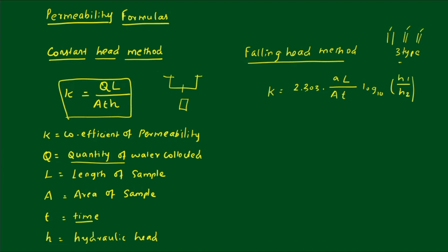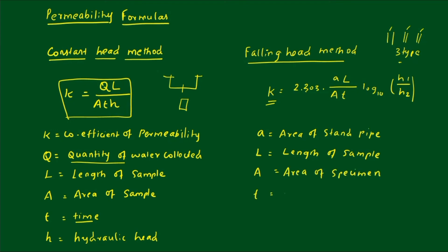So k is the coefficient of permeability. Lowercase a is the area of the stand pipe. L is the length of the sample. Capital A is the area of the specimen. T is equal to T2 minus T1, where T2 is the time corresponding to head H2 and T1 is the initial time corresponding to H1. H1 is the initial head and H2 is the final head.